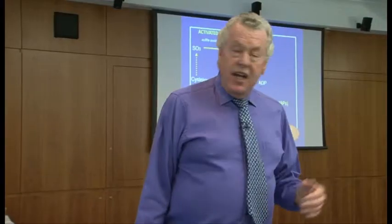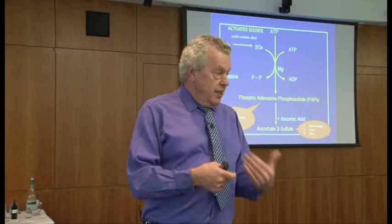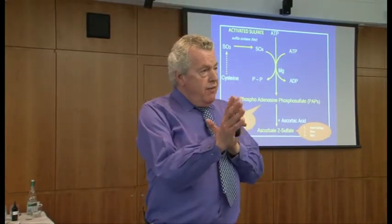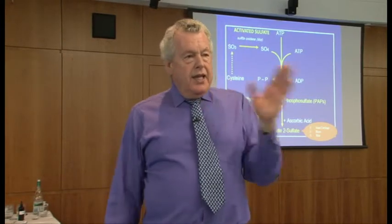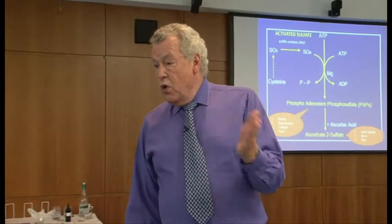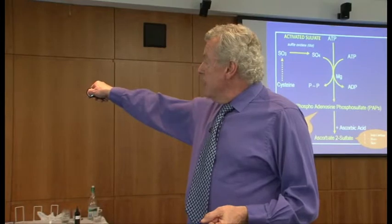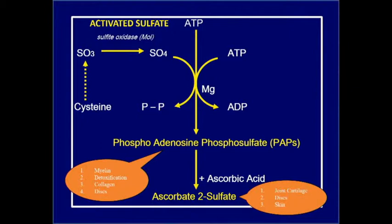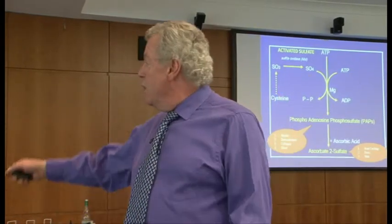SO3, or sulfite, has antifungal properties. They add sulfites to wine during fermentation — usually as sodium or potassium metabisulfite — to stop fermentation and preserve wine during export. Some people can't remove sulfites and get blinding headaches from wine or beer. These people are genetically predisposed and need nutrients to boost the sulfite oxidase pathway. They can usually tolerate gin, cognac, or whiskey because those are distilled rather than fermented.